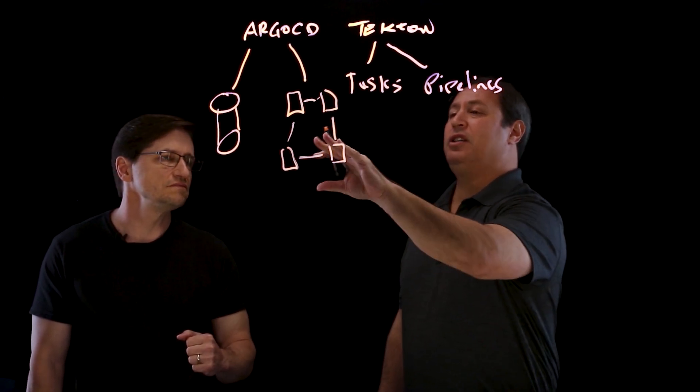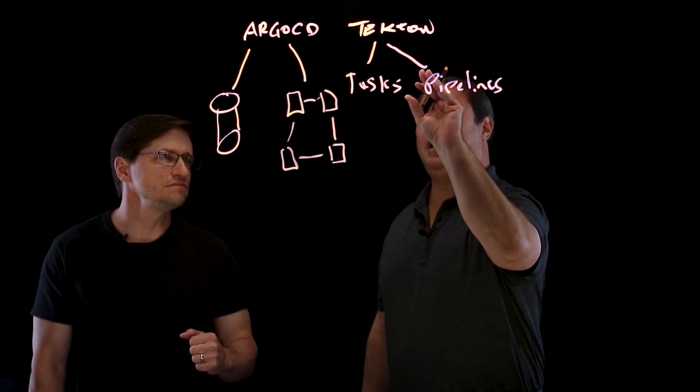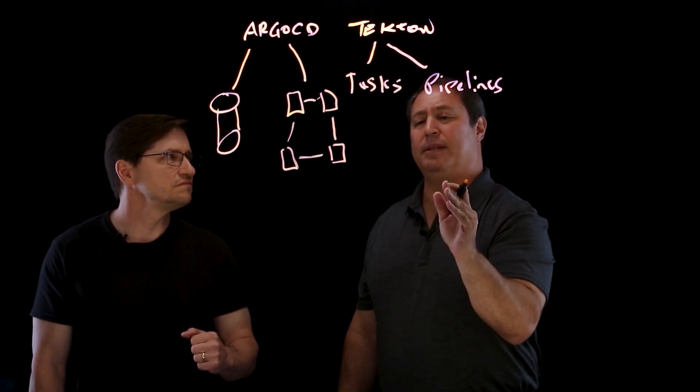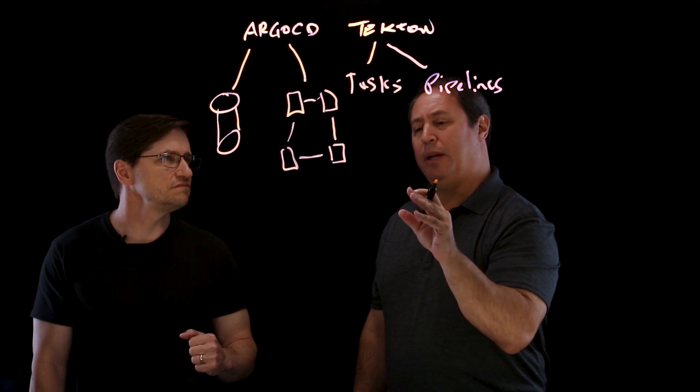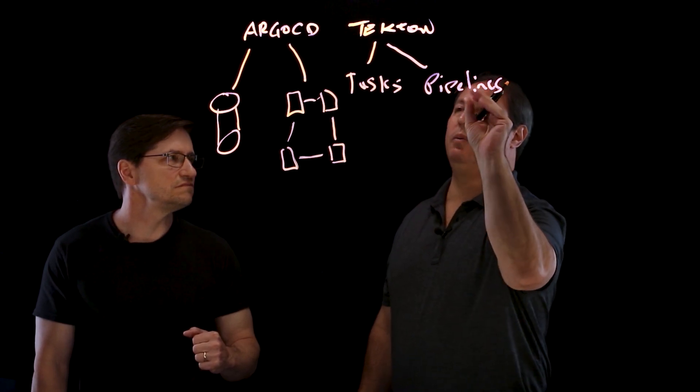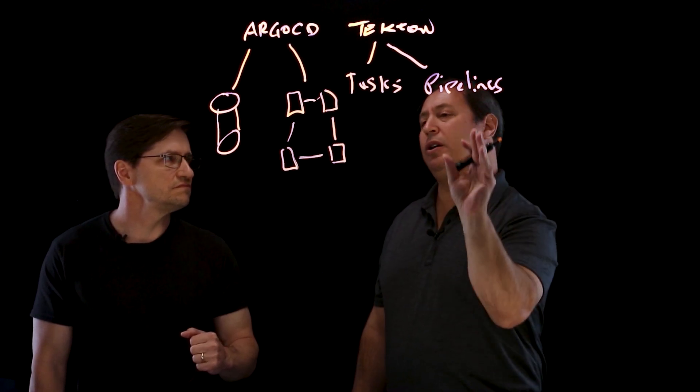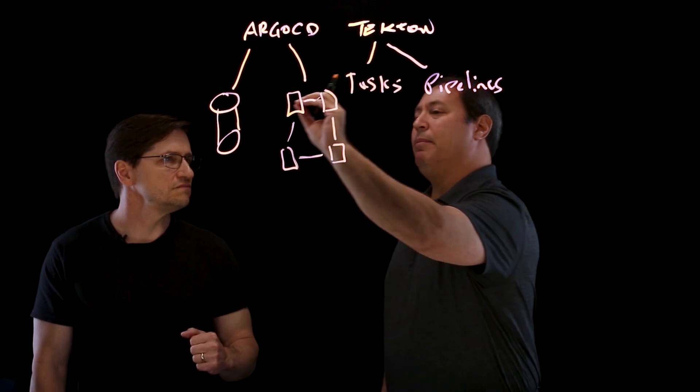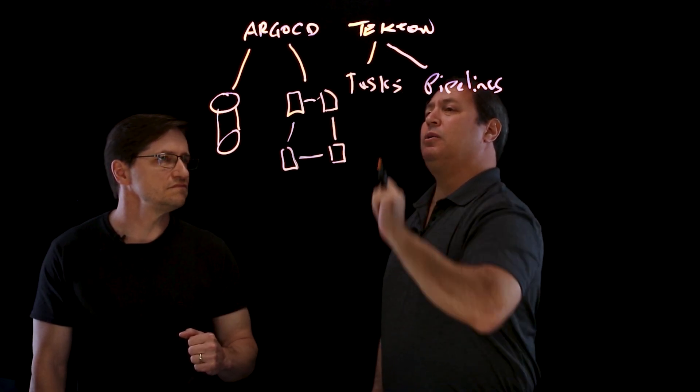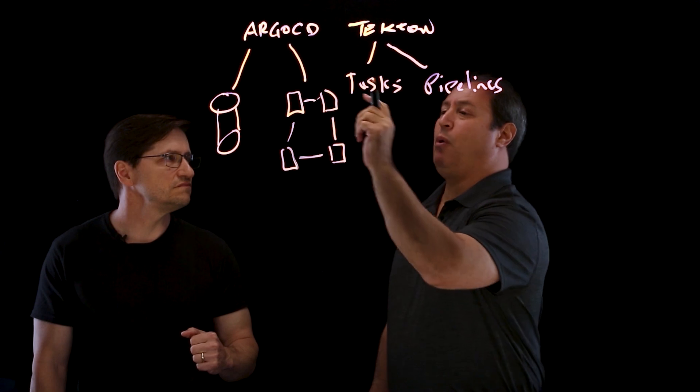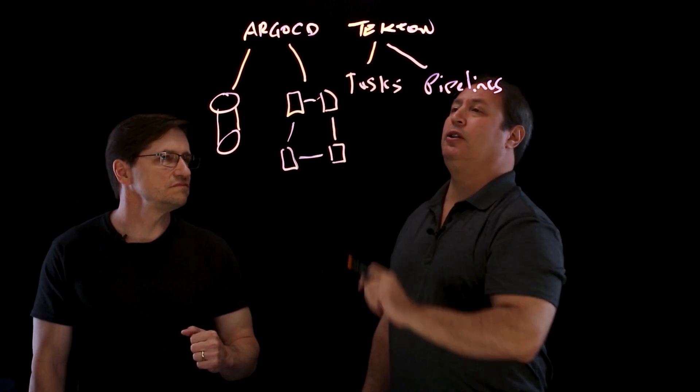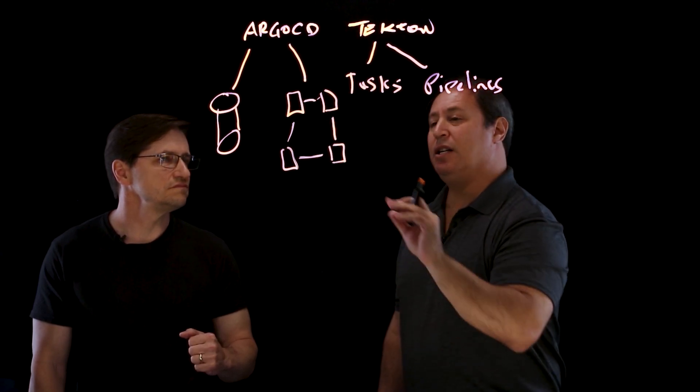So you've got these two models. You can use Tekton all the way up to the step of building and deploying an image and putting an image in a registry. And then you can take all your configuration files, put them in a Git repo. And all you've got to do with Argo CD is point it at the Git repo and point it at a Kubernetes cluster. And it's going to do the rest.